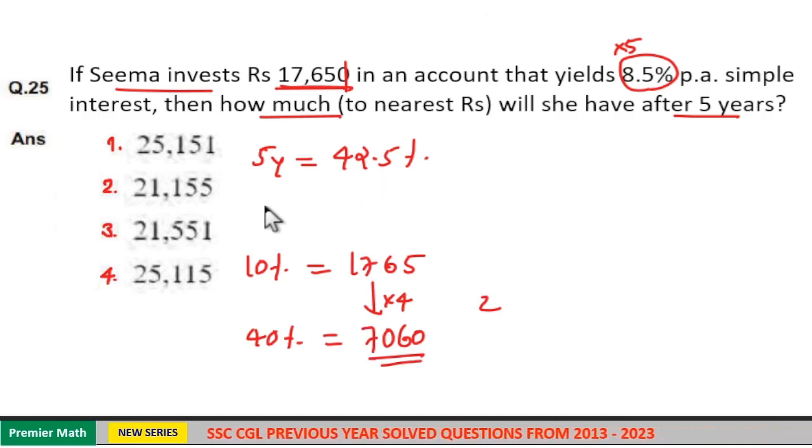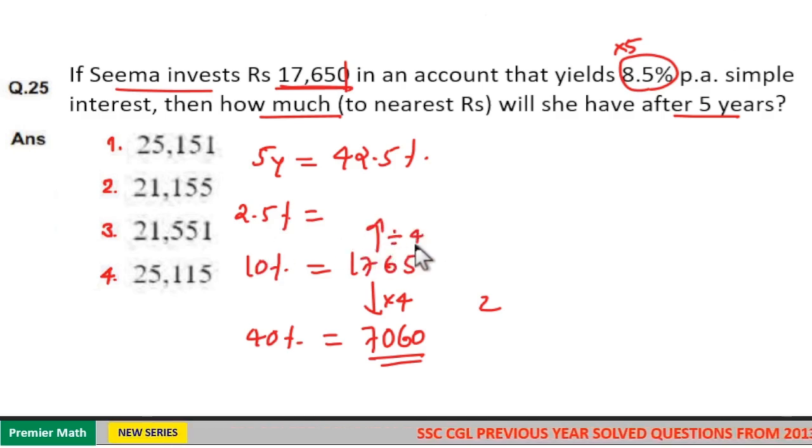Now, we need 2.5%. So, 2.5% means 10 by 4 is 2.5%. So, 1,765 divided by 4 is equal to 2.5%. 4 goes 4 times in 17, remaining 16. 4 goes 4 times in 16, remaining 5. 4 goes 1 time in 5, remaining 0.25.